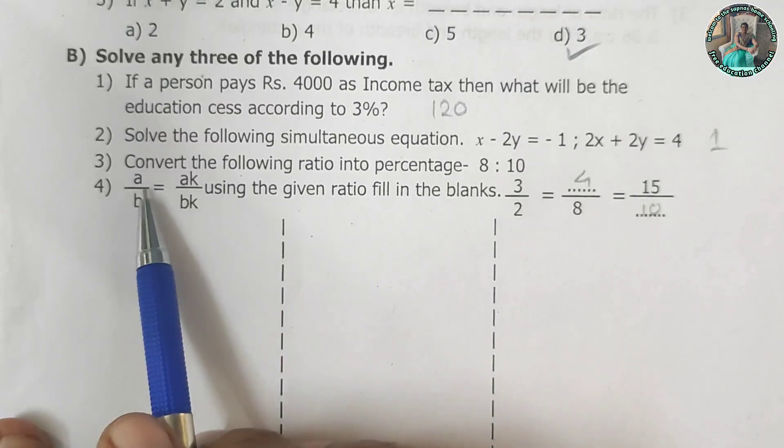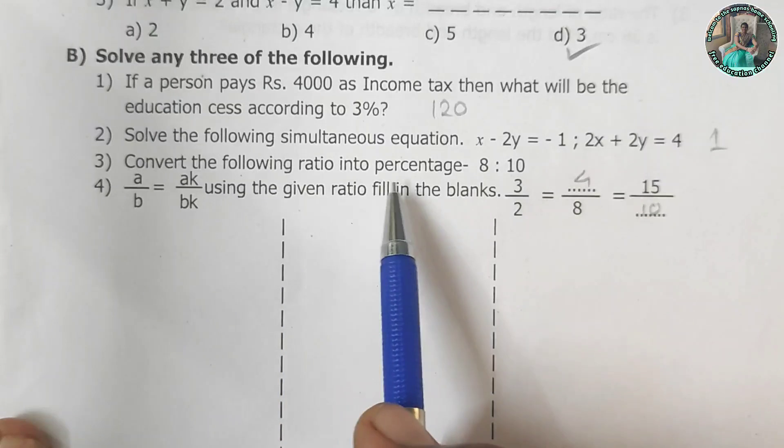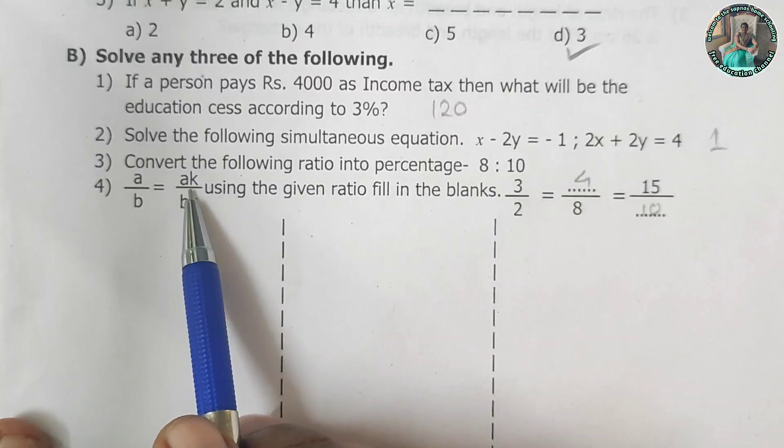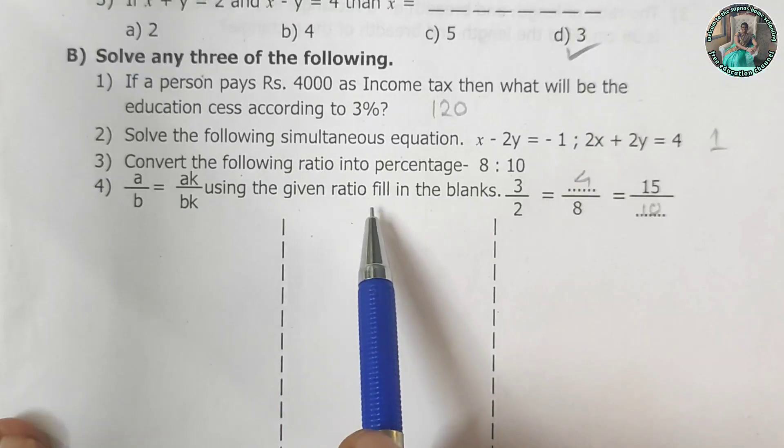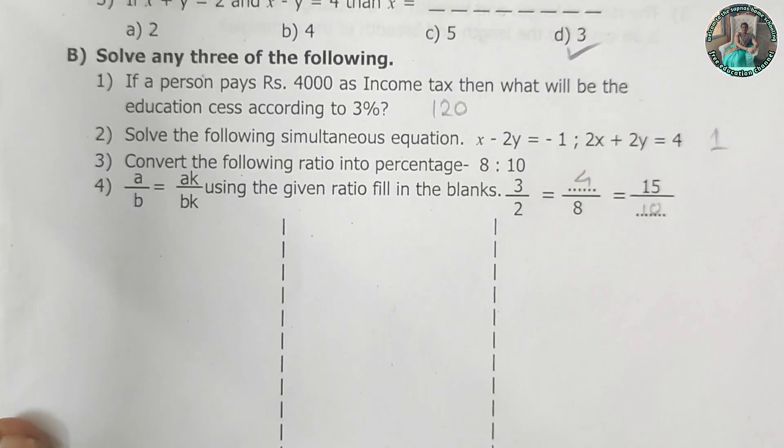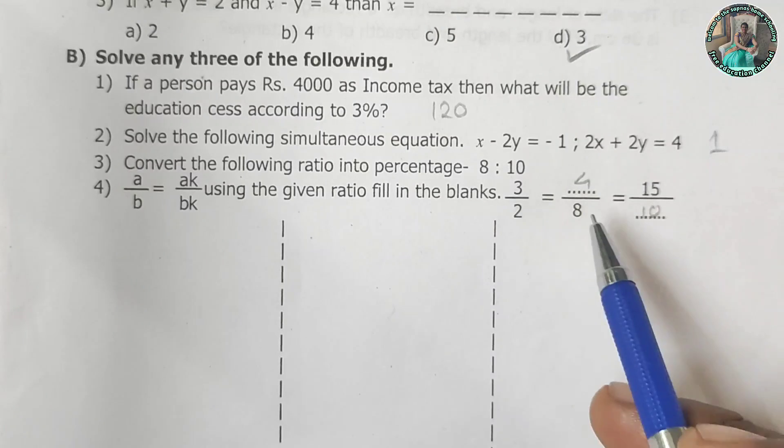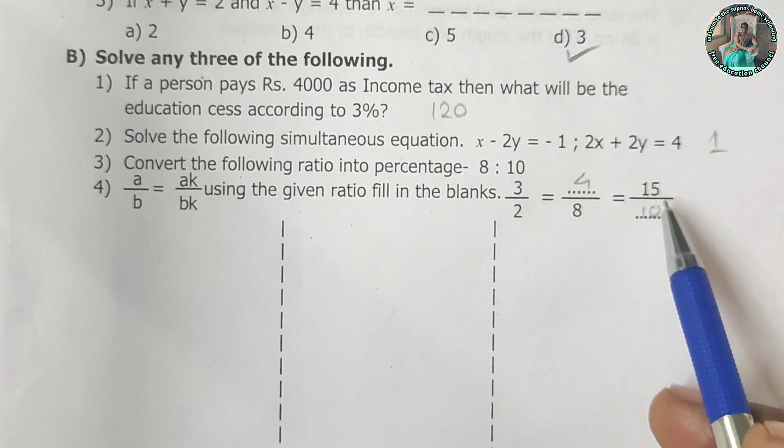The answer is 1. Convert the following ratio into percentage. 8 is to 10. a upon b is equal to ak upon bk. Using the given ratio, fill in the blanks. 3 upon 2 is equal to dash upon 8 is equal to 15 upon dash.